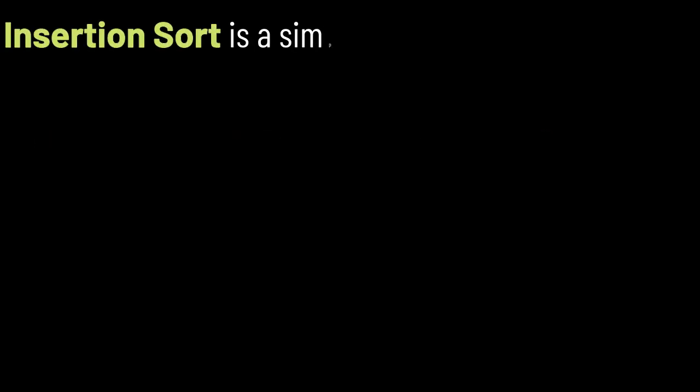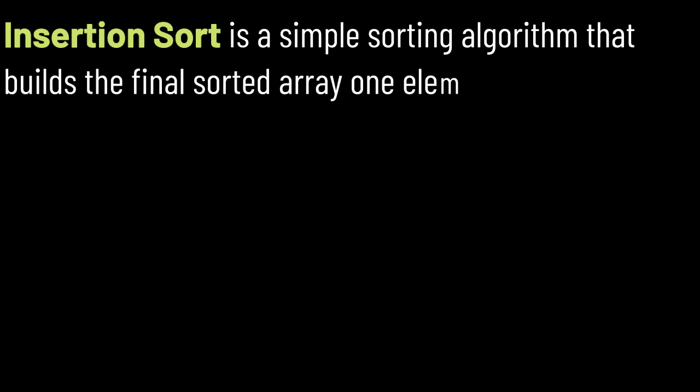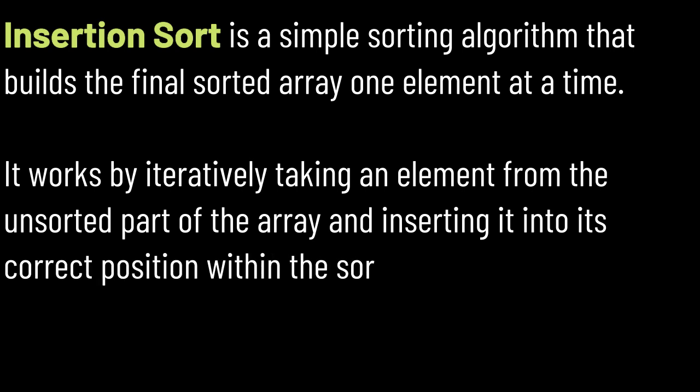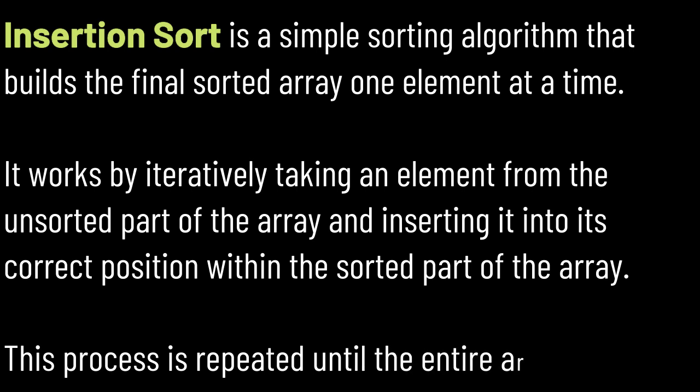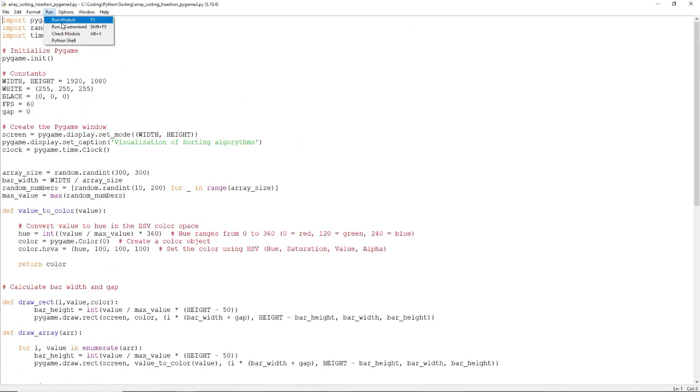Insertion Sort is a simple sorting algorithm that builds the final sorted array one element at a time. It works by iteratively taking an element from the unsorted part of the array and inserting it into its correct position within the sorted part of the array. This process is repeated until the entire array is sorted. Here is the Python code to visualize the Insertion Sort algorithm.